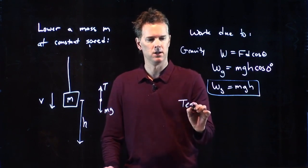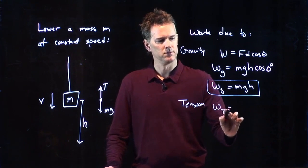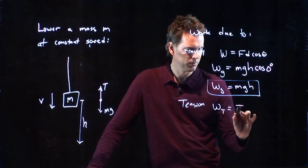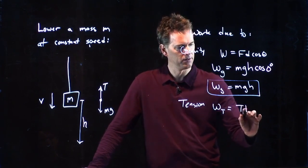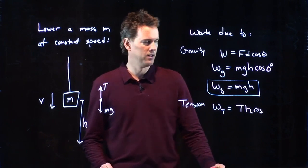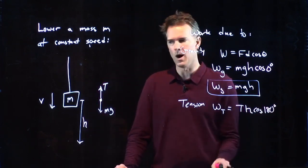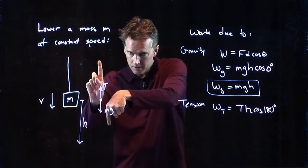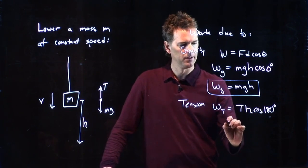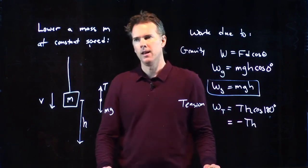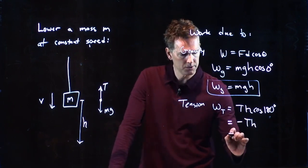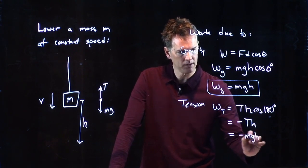What about the work due to tension in the cable? Wt. What's the work due to the tension in the cable? Well, it's the force, which is tension T. It's the distance, which is h. And now it is the cosine of the other angle that you guys said, which is 180 degrees. Why? Because tension is up. Displacement is down. That angle between those two is 180 degrees. And so this is where you pick up the minus sign right there. We get minus Th. And if it's moving at constant speed, we know that tension has to be equal to mg. And so we get minus mgh.